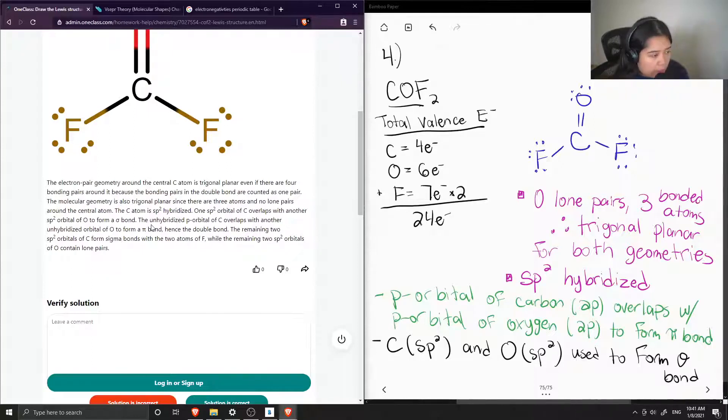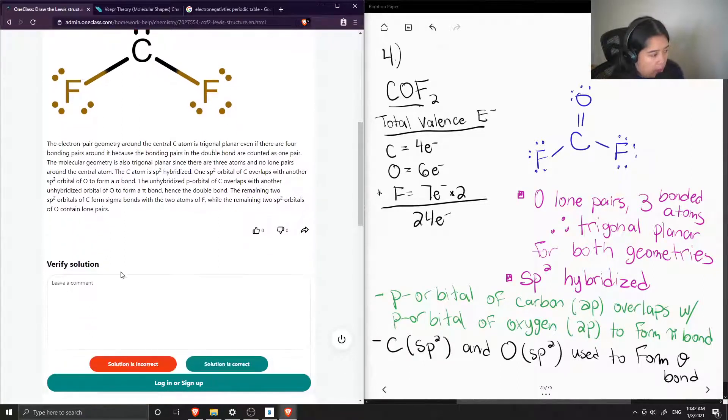Carbon atom is sp2 hybridized and one sp2 orbital of carbon overlaps with another sp2 orbital of oxygen to form a sigma bond. The unhybridized p orbital of carbon overlaps with another unhybridized orbital of oxygen to form a pi bond, hence the double bond. The remaining two sp2 orbitals of carbon form sigma bonds with the two atoms of fluorine, while the remaining sp2 orbitals of oxygen contain lone pairs.